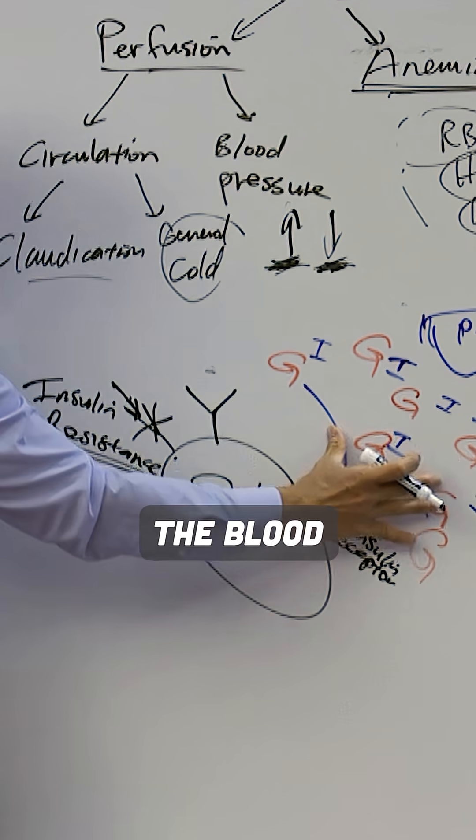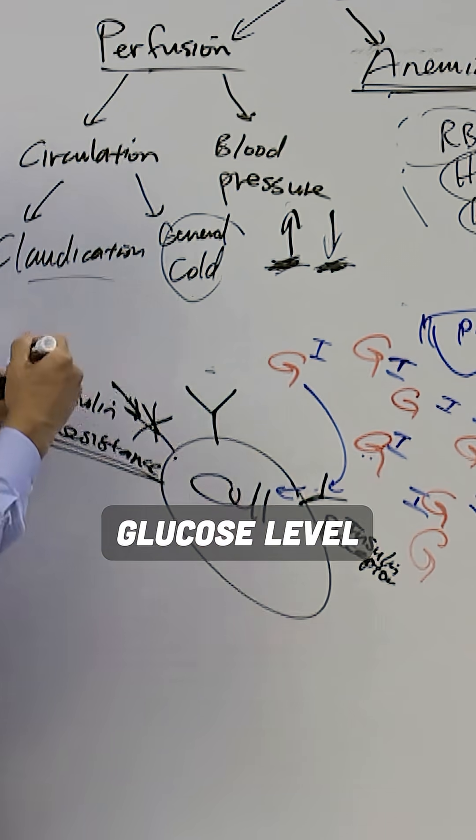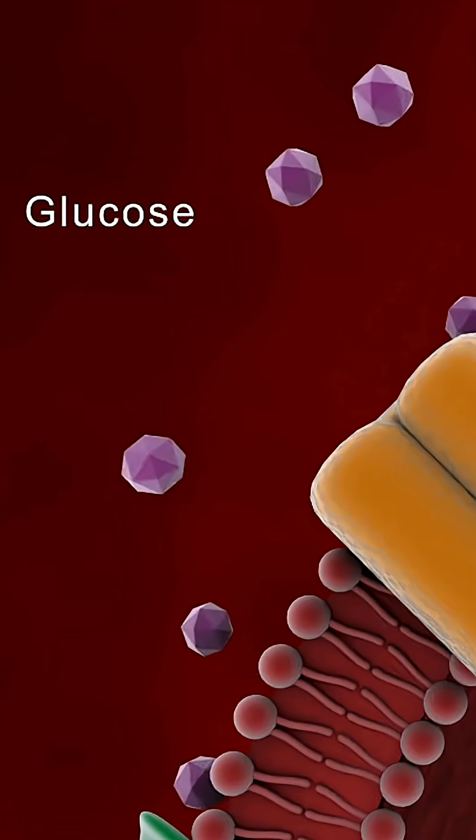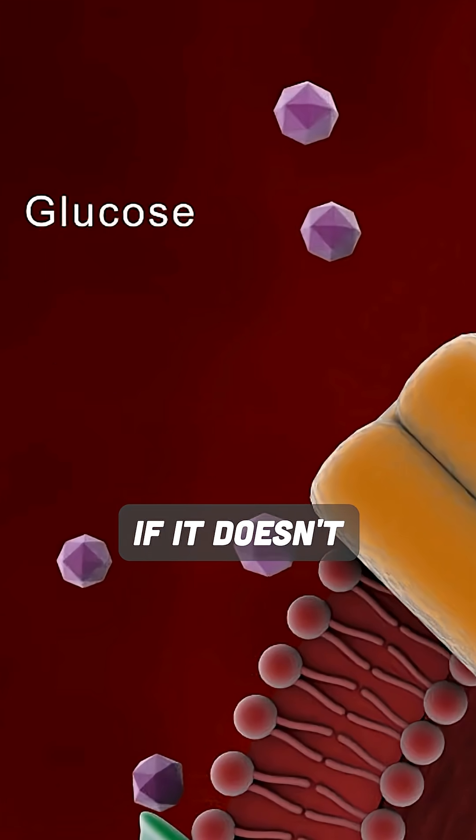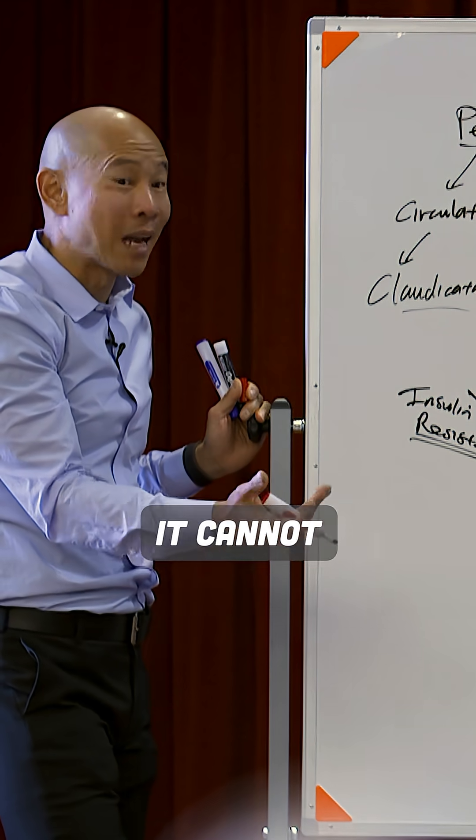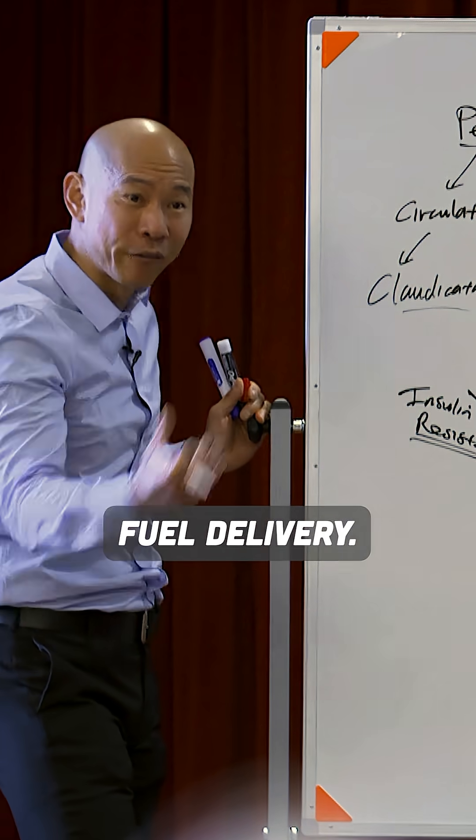But as the glucose level in the blood is high, what's happening to the glucose level in the cell? It's all stuck outside. Nothing's getting in. So if your cell doesn't have glucose, what happens to it? It cannot make energy because you have no fuel. Fuel delivery.